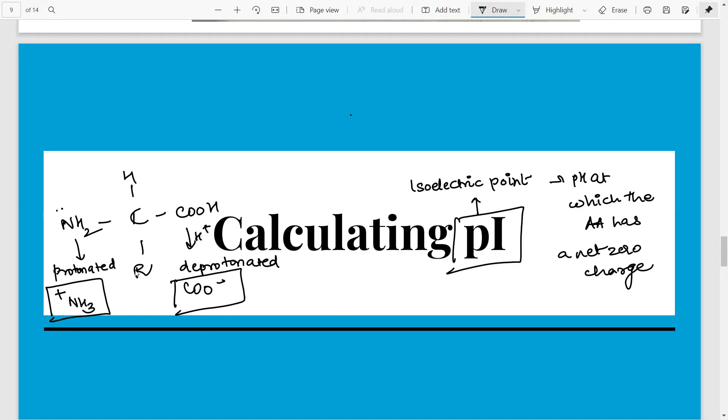Now there is a twist for those amino acids that have an R group which is ionizable. So for them there is a slight modification in how to calculate the pI.